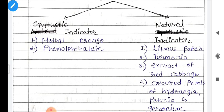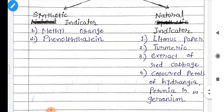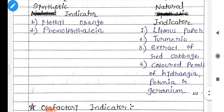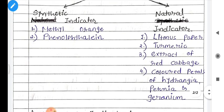The second natural indicator is turmeric, which is used to check acidic and basic substances. Third is the extract of red cabbage — the red cabbage can be used as a natural indicator. Fourth, the colored petals of hydrangea, petunia and geranium — these three substances occur naturally and can be used as indicators. So basically, both natural and synthetic indicators indicate whether a substance is acidic or basic by changing or not changing their color.